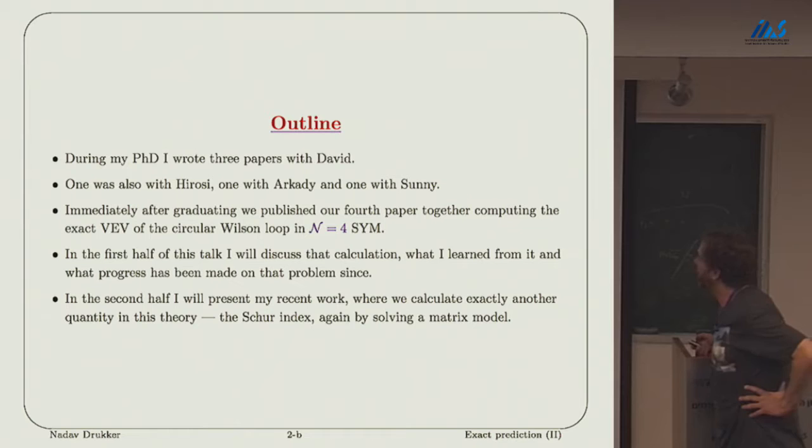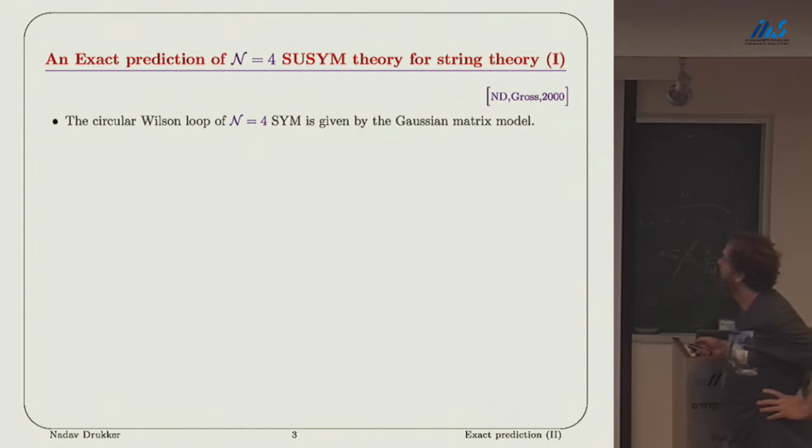It discusses the circular Wilson loop in N equals four super Yang-Mills. At the beginning of the talk I will review a little bit this calculation and what has been calculated from it in string theory, then I will present new work on another matrix model describing N equals four super Yang-Mills.